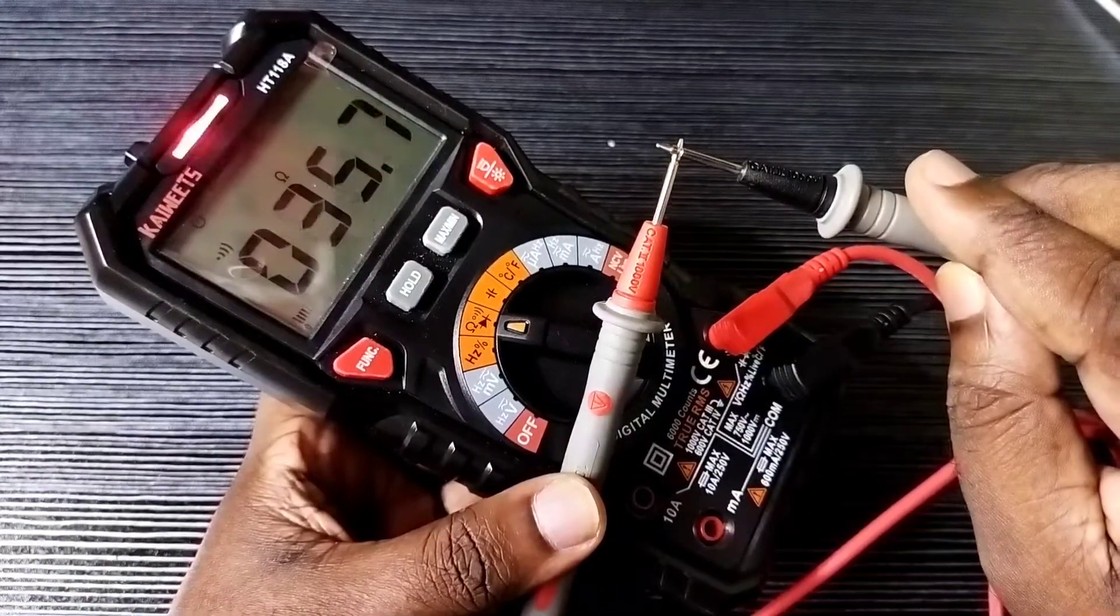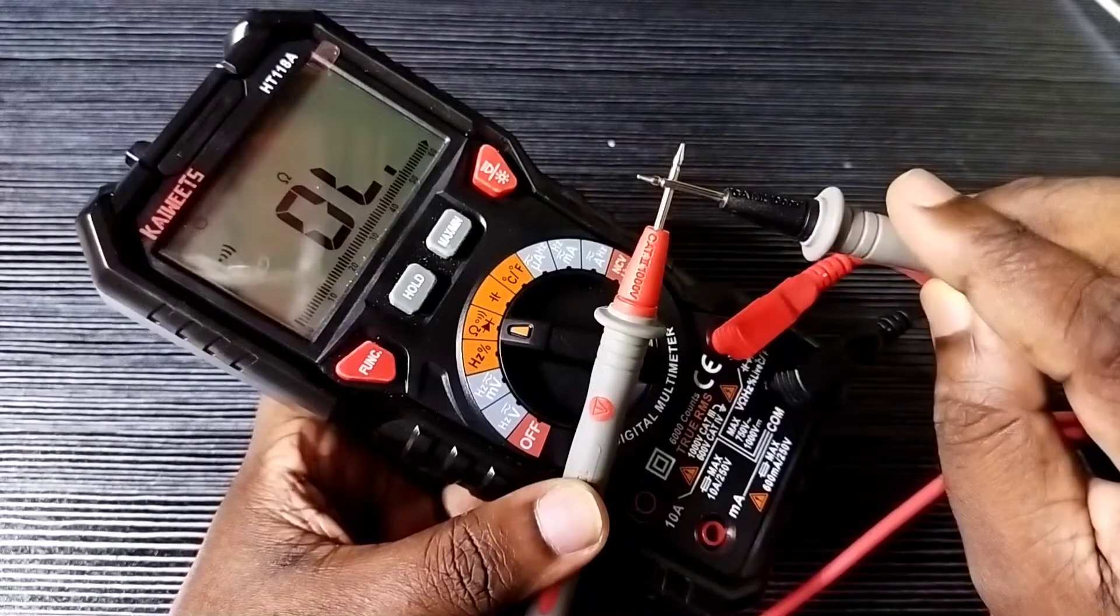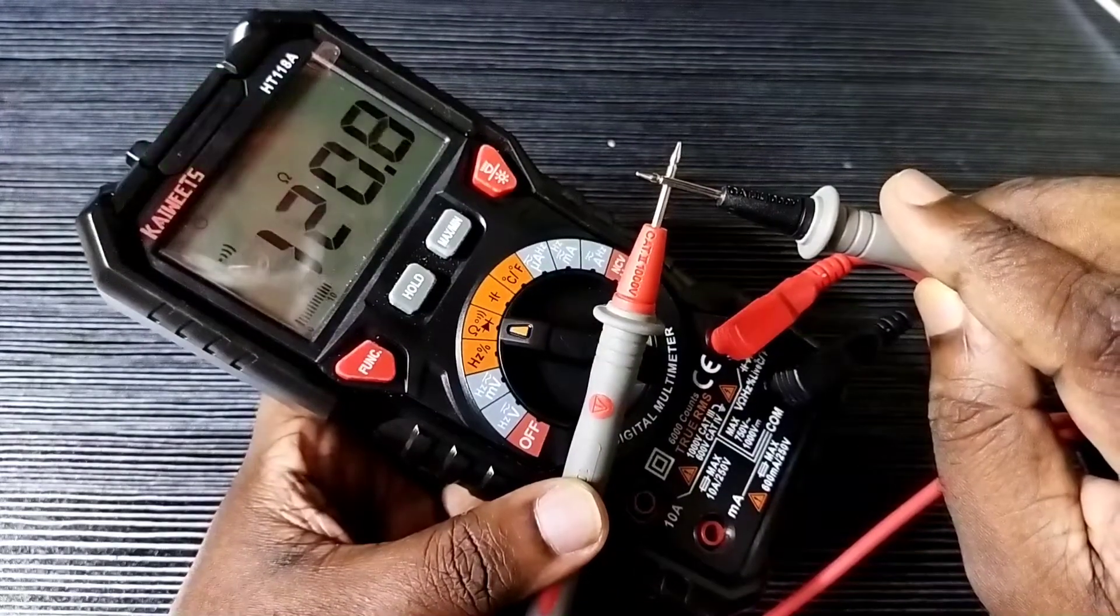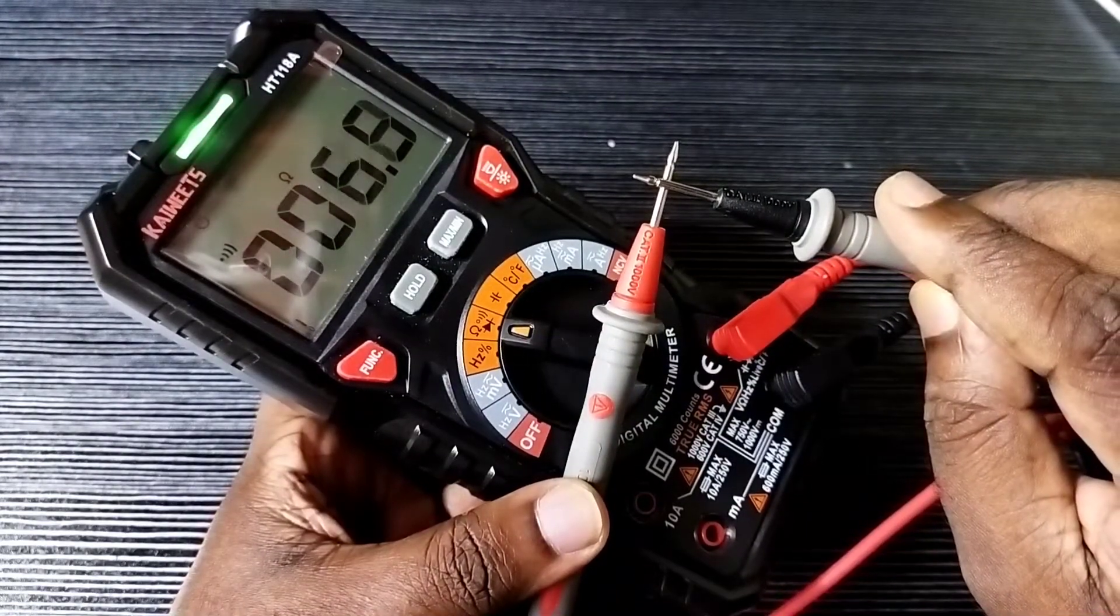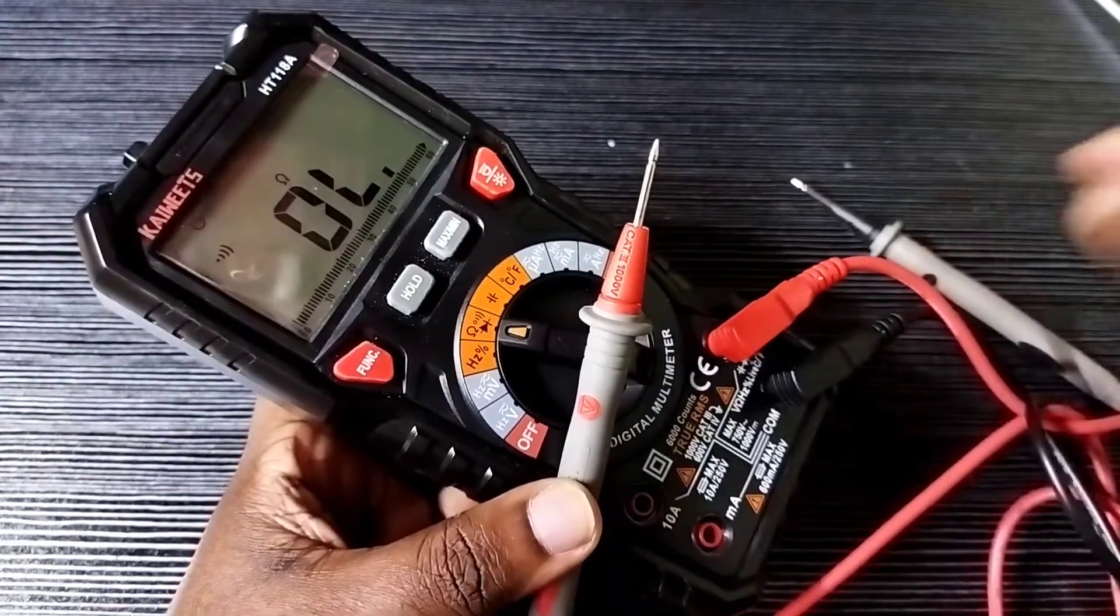So this way we can measure continuity using this Kivitz digital multimeter. Just select the continuity function using the rotary switch, then using the function switch we need to select the continuity option.